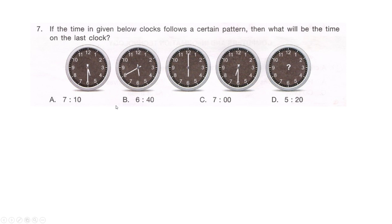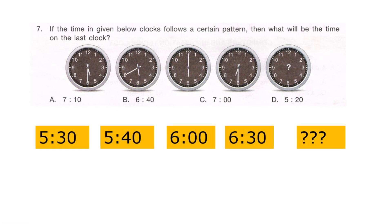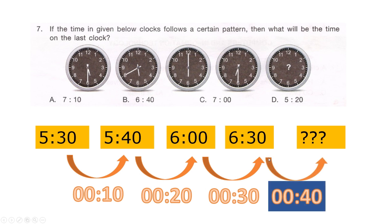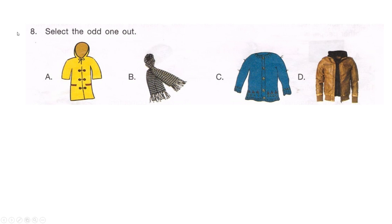There's a pattern to identify. The times are 5:30, 5:40, 6:00, and 6:30. The intervals are increasing by 10 minutes each time: first 10 minutes, then 20 minutes, then 30 minutes, so the next interval is 40 minutes. Adding 40 minutes to 6:30 gives 7:10, so our correct option is option A: 7:10.